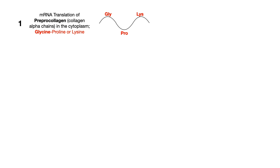The big takeaway from this step for your exams is to know that the most important structure is the glycine residue. If you get a question asking which best predicts the structural integrity of collagen, or which is the most important residue for collagen, the answer is glycine. Don't forget that. So in step one, we translate pre-procollagen in the cytoplasm, with glycine always present along with proline or lysine.